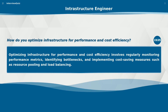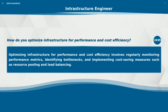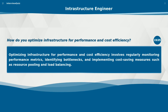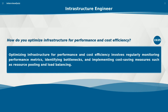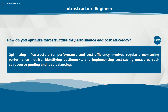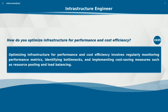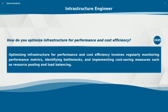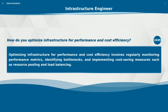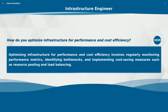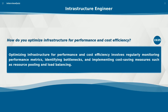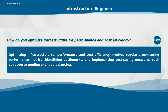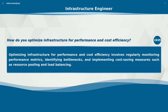How do you optimize infrastructure for performance and cost efficiency? Optimizing infrastructure for performance and cost efficiency involves regularly monitoring performance metrics, identifying bottlenecks, and implementing cost-saving measures such as resource pooling and load balancing.